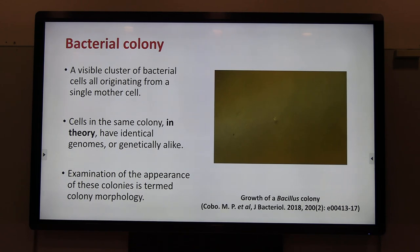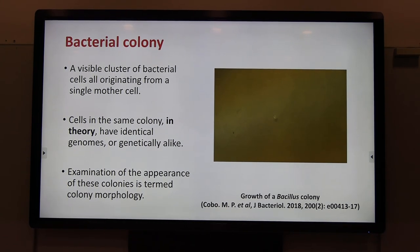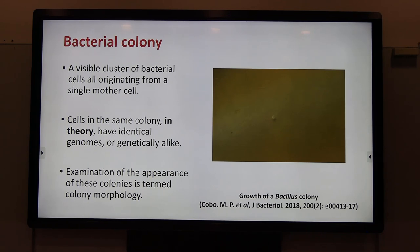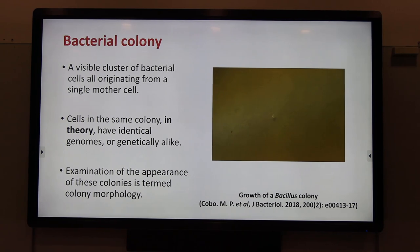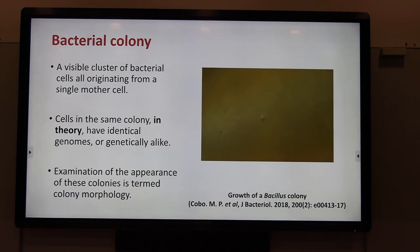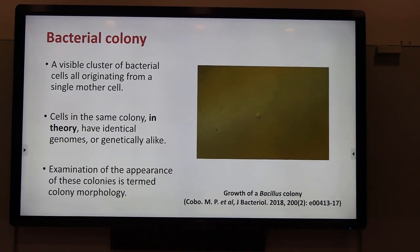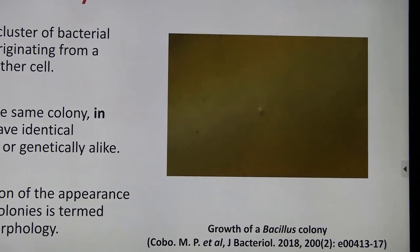So what is a bacterial colony? A bacterial colony is a visible cluster of bacterial cells, all originating from one single mother cell. As you already learned from the previous lectures, a bacterium is too small to be seen without a microscope. However, when cells grow on an agar plate, they can consume the nutrients within the medium, and each single cell can replicate many times to generate millions or billions of cells.